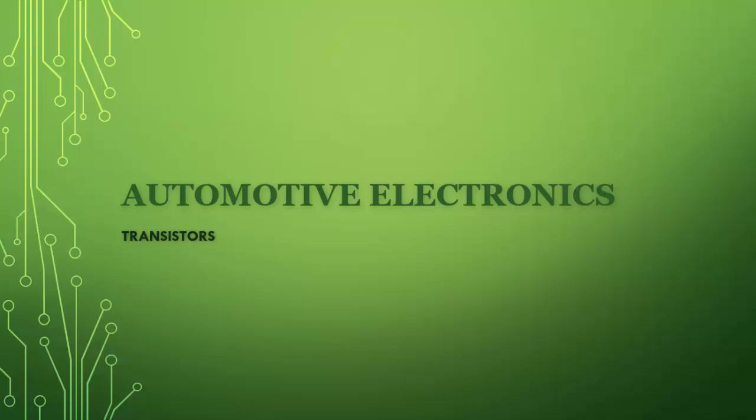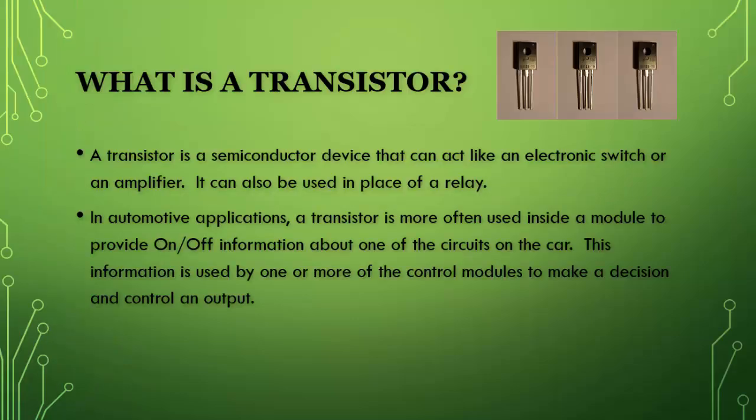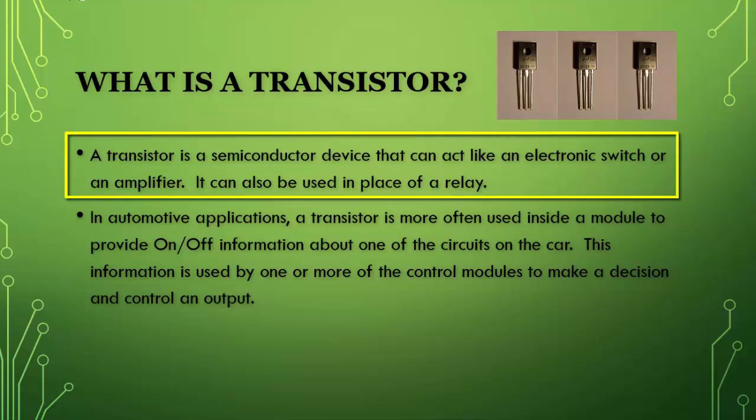Let's start with the basics. What is a transistor? A transistor, like a diode, is a semiconductor device. It can act like an electronic switch, and it can also be used as an amplifier, and it can even be used in place of a relay in an electrical circuit.